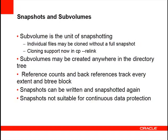BtrFS metadata includes reference counts and back references that track every extent, every file data extent, and every B-tree block. This allows us to very quickly, when we know a given block on disk is bad, find anything that might be referencing that block. Snapshots can be written and snapshotted again, but they are not suitable for continuous data protection — that's where you want to find every single revision ever made to a file, which BtrFS doesn't do well.